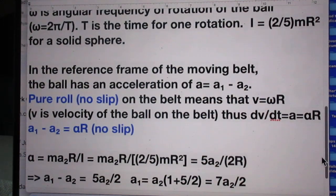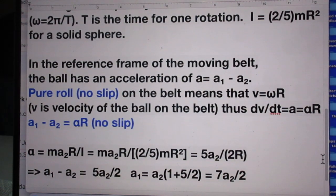In the reference frame of the moving belt, the ball has an acceleration A equals A1 minus A2. That's trivial, of course. Now let's once more discuss the meaning of pure roll, no slip.